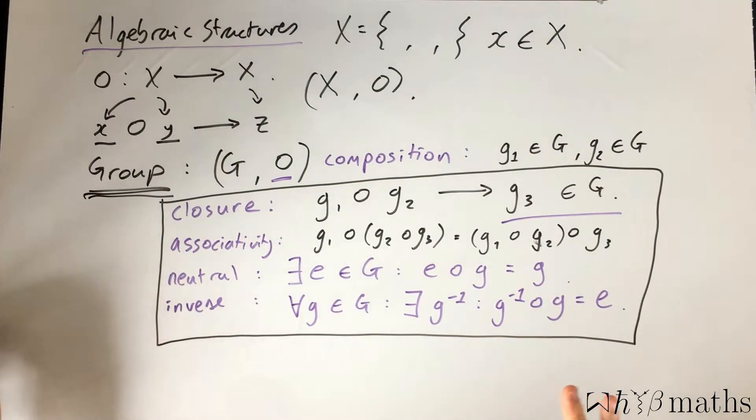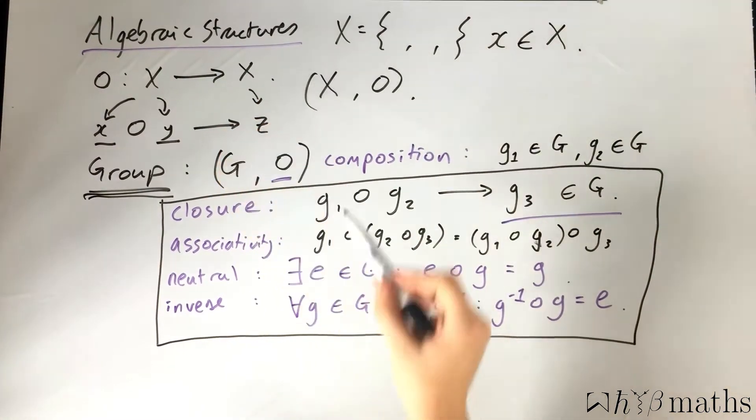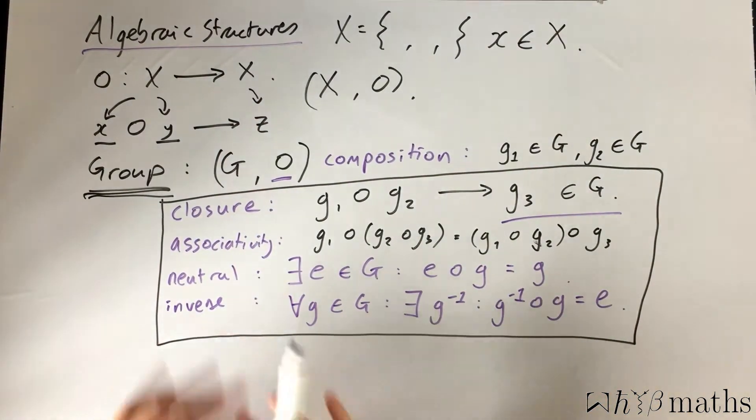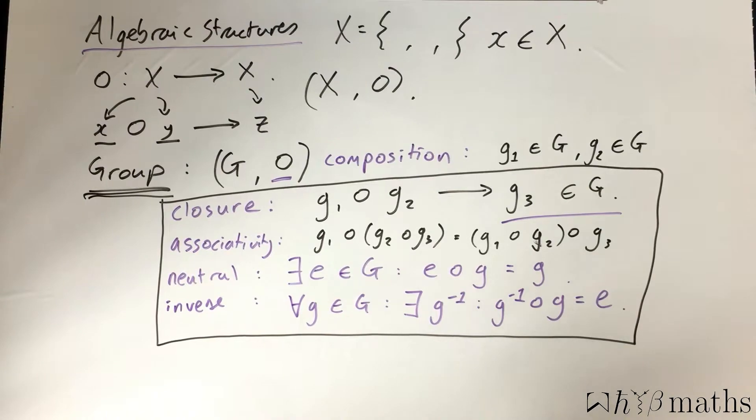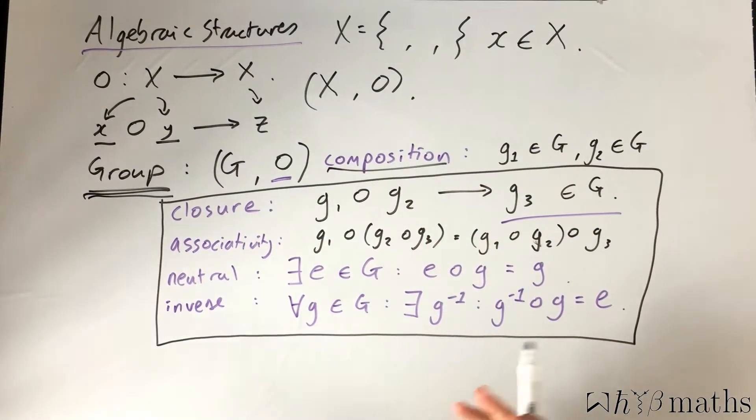Now we come to a key observation. I haven't told you anything about what the set G is or what its elements are. They can be anything, they can be abstract. So long as its elements satisfy these rules under the composition operation, they're a group.